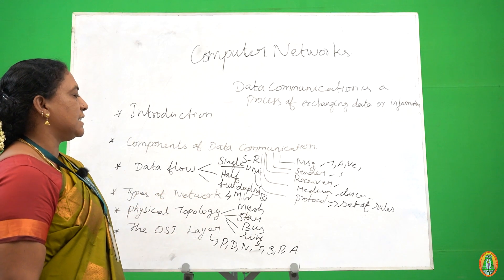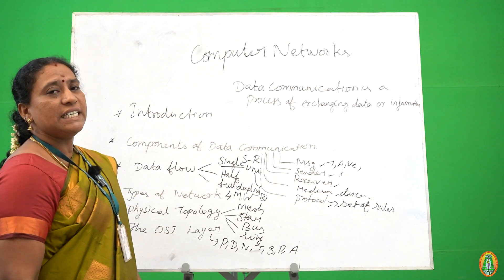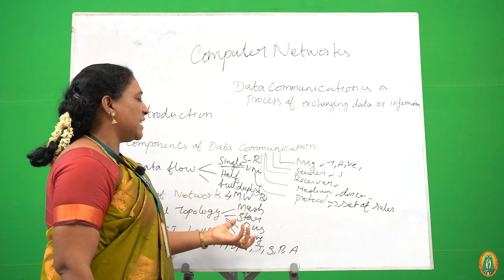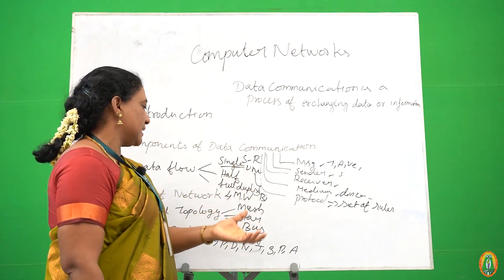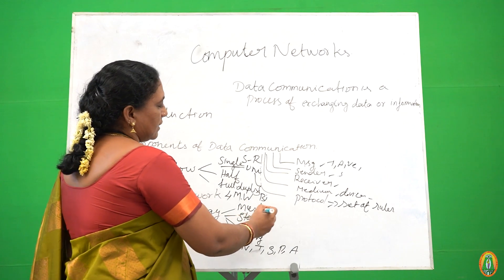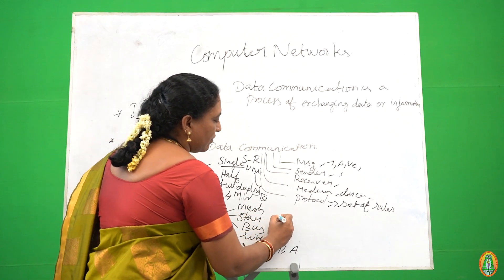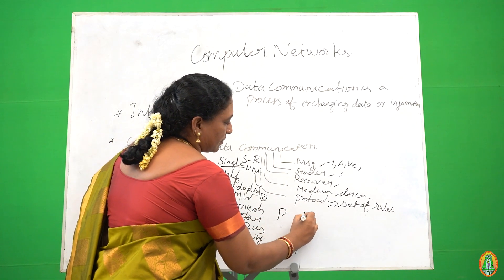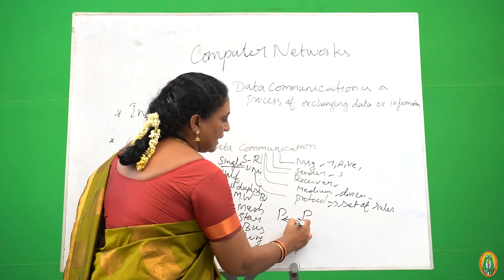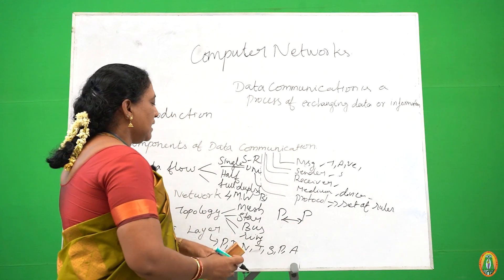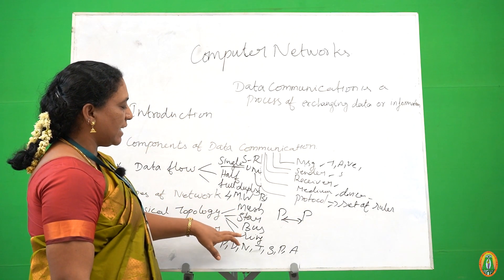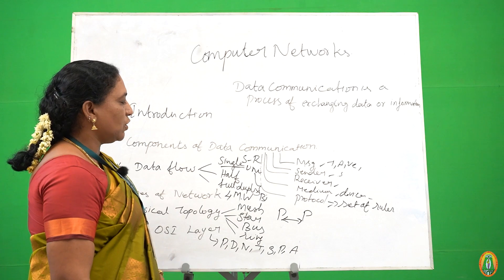And then physical topology. What is physical topology? Physical topology is nothing but the arrangement of devices. We are using devices between layers. One layer to another layer using mesh topology, star topology, bus topology, and ring topology.